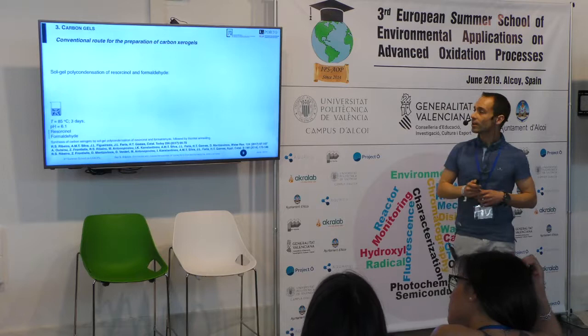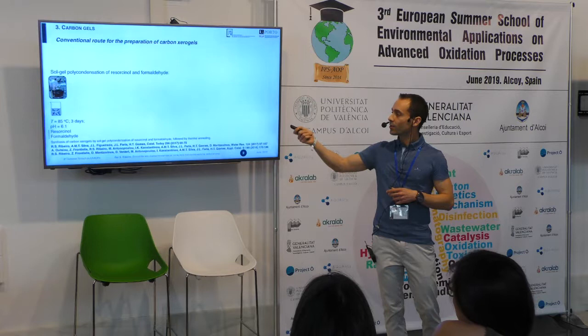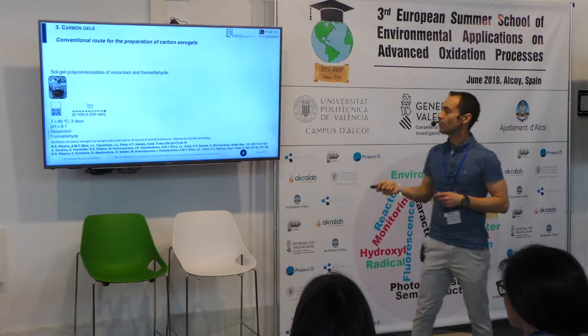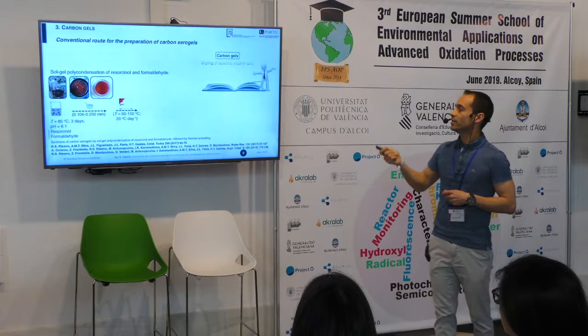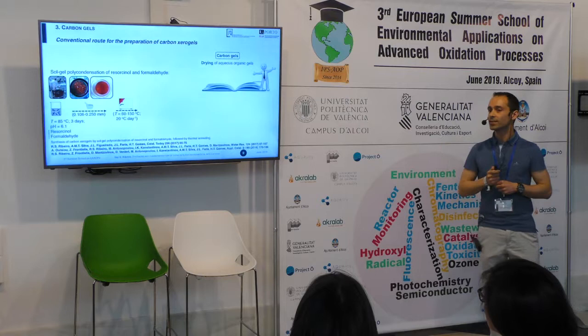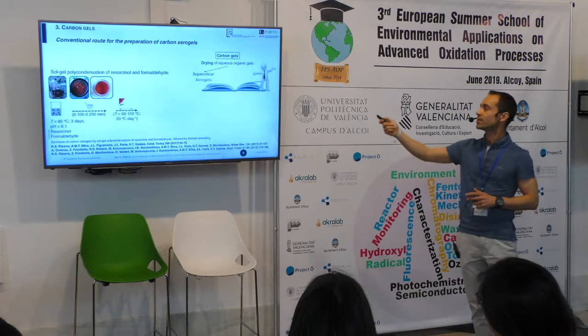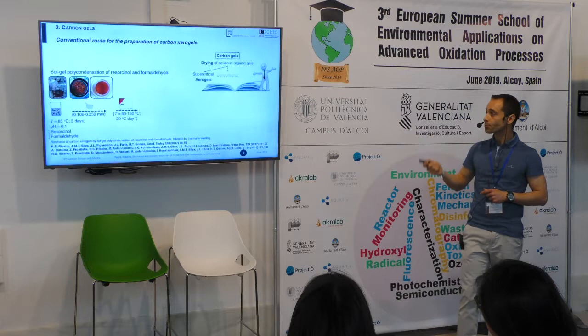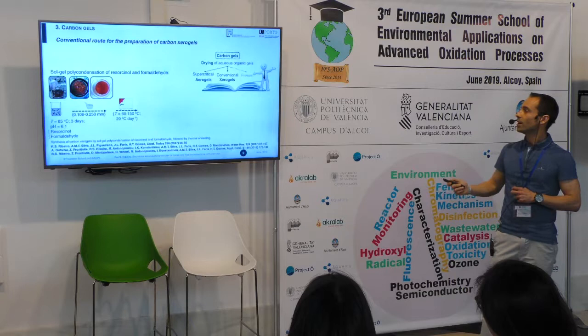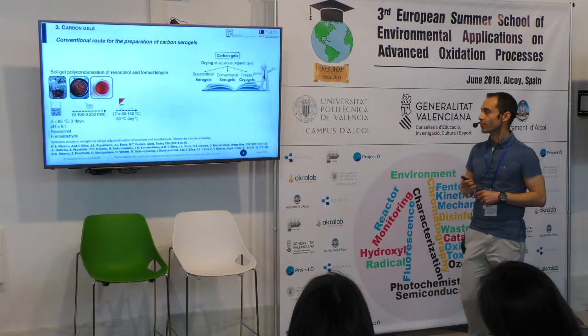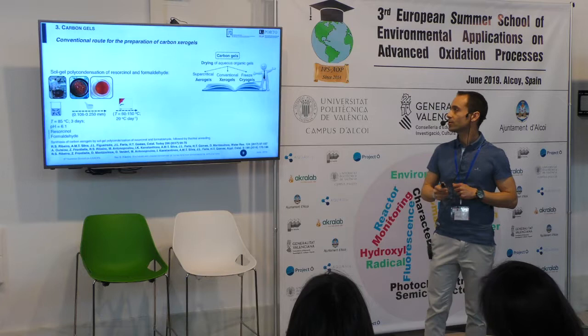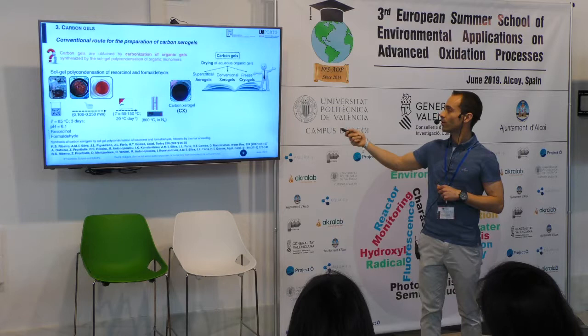Carbon gels can be prepared by polycondensation of resorcinol and formaldehyde. After the gelation step, the resulting solid can be shaped as desired. The drying step will actually dictate the kind of carbon gel obtained at the end of the treatment. For instance, if supercritical drying is used, you will obtain a carbon aerogel. If conventional drying is employed, you will obtain a carbon xerogel. And if freeze drying is used, you will obtain carbon cryogels. In this example, conventional drying was used, and after thermal annealing, we obtain carbon xerogels.